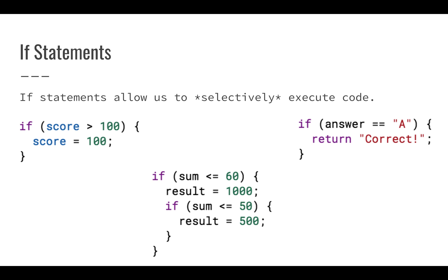Then we have if sum is less than or equal to 60, result is 1,000. And we can even embed an if statement inside of another if statement. So here, if sum is less than or equal to 50, we set result equal to 500. If sum is, say, 55, we end up with result equal to 1,000. If the sum is 45, we end up with result equal to 500 after this if statement is completed. You can see how you can build these together to make more and more sophisticated decisions.